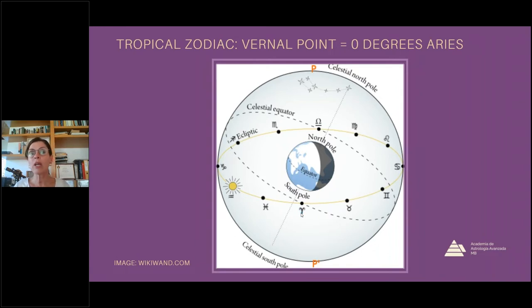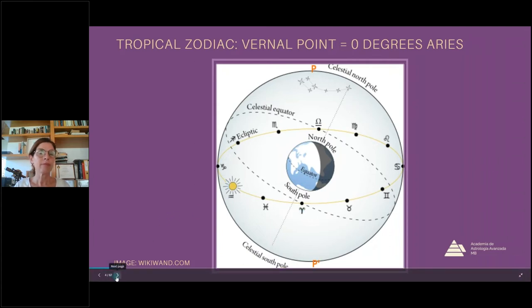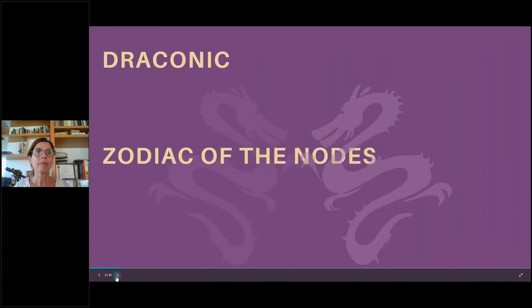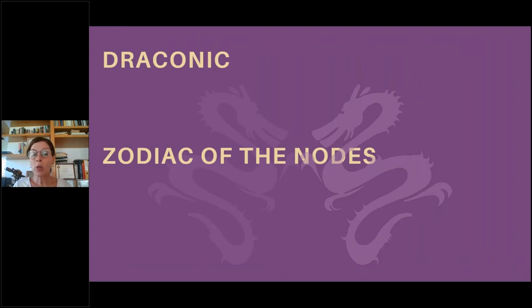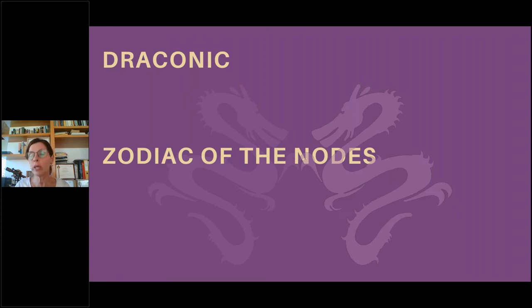Whenever we have a zodiac, we have two planes that intersect. Today we're going to talk about the zodiac of the nodes. We need to know what the lunar nodes are — the draconic zodiac is the zodiac of the lunar nodes.